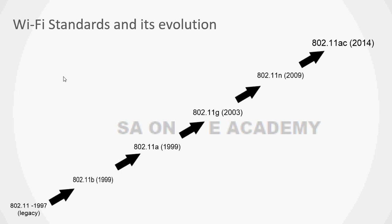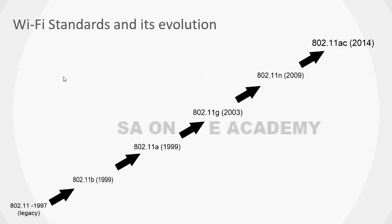802.11ac is the most important and currently used standard. There are others we will discuss later, but these are the standards that will be used throughout your curriculum. Now we will discuss why Wi-Fi is so popular, especially given that we have mobile broadband networks and mobile operators available.